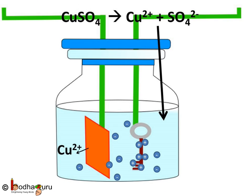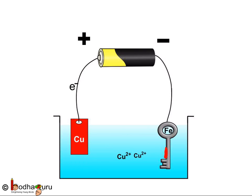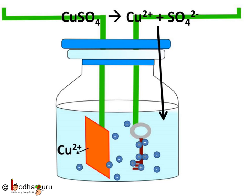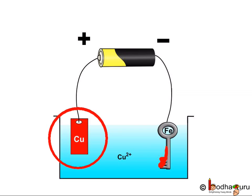Molecules of the electrolyte break down into ions, which are charged particles, and they are responsible for the flow of electricity through the liquid. So, copper sulphate breaks down into copper and sulphate ions. Copper ion is positively charged, so it gets attracted to the key which is connected to the negative terminal of the battery. There, it gets electrons and turns into a copper atom and gets deposited on the key. Now, the copper plate supplies the solution with copper ions to compensate for copper ion deficiency. That is why the copper strip starts to decay.